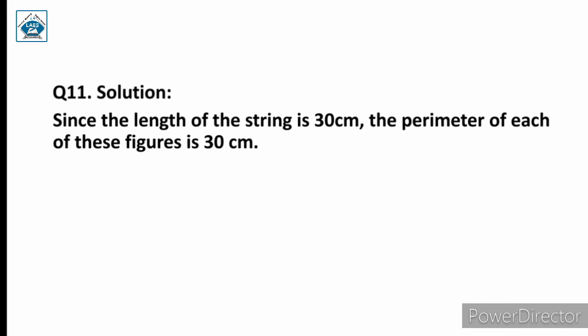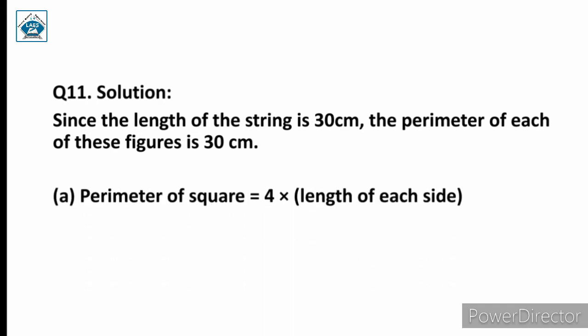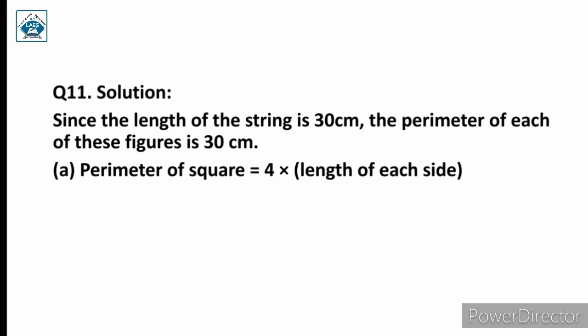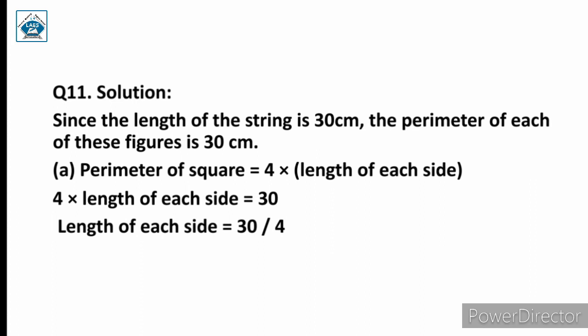Since the length of the string is 30 centimeter, the perimeter of each figure is 30 centimeter. For the square, perimeter equals 4 into length of each side, so 4 into length of each side equals 30. Therefore, length of each side equals 30 divided by 4, which is 7.5 centimeter.